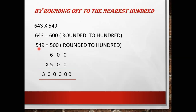Similarly, 549: in the tens place you have 4, which is less than 5, so 549 rounds to 500. After rounding off we have 600 × 500. When you multiply 600 × 500 you get 3,00,000 (3 lakhs) as the answer.